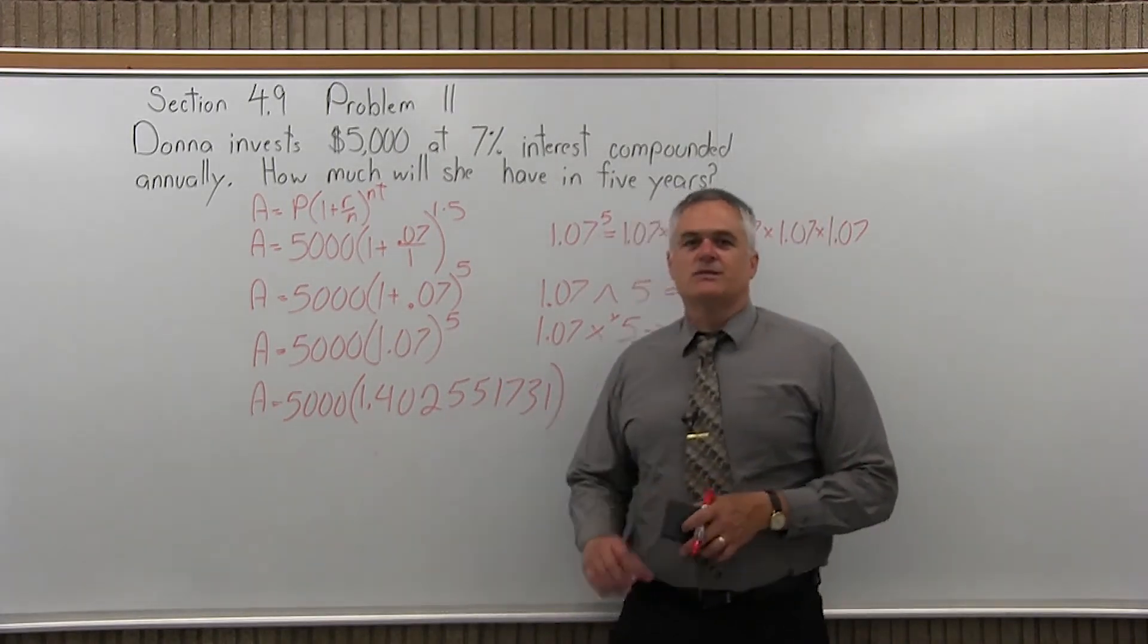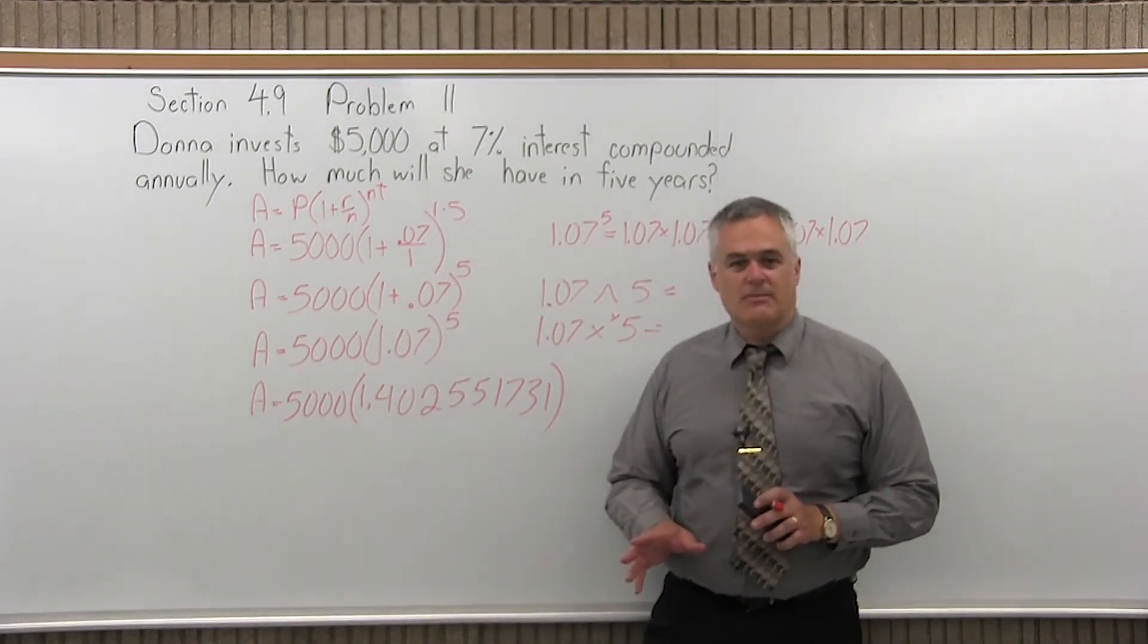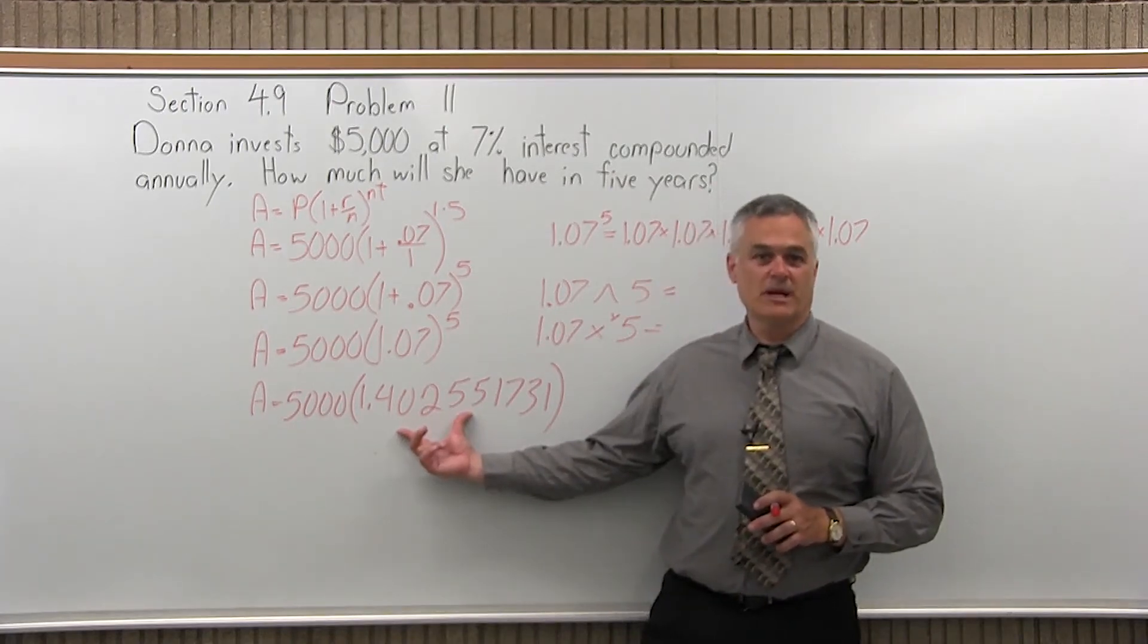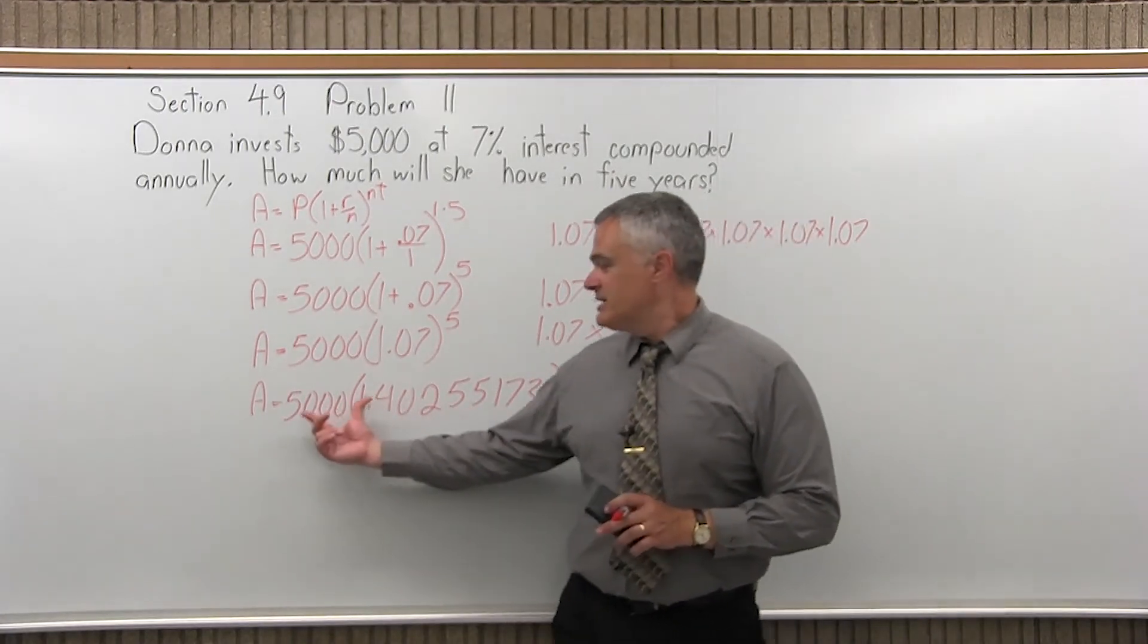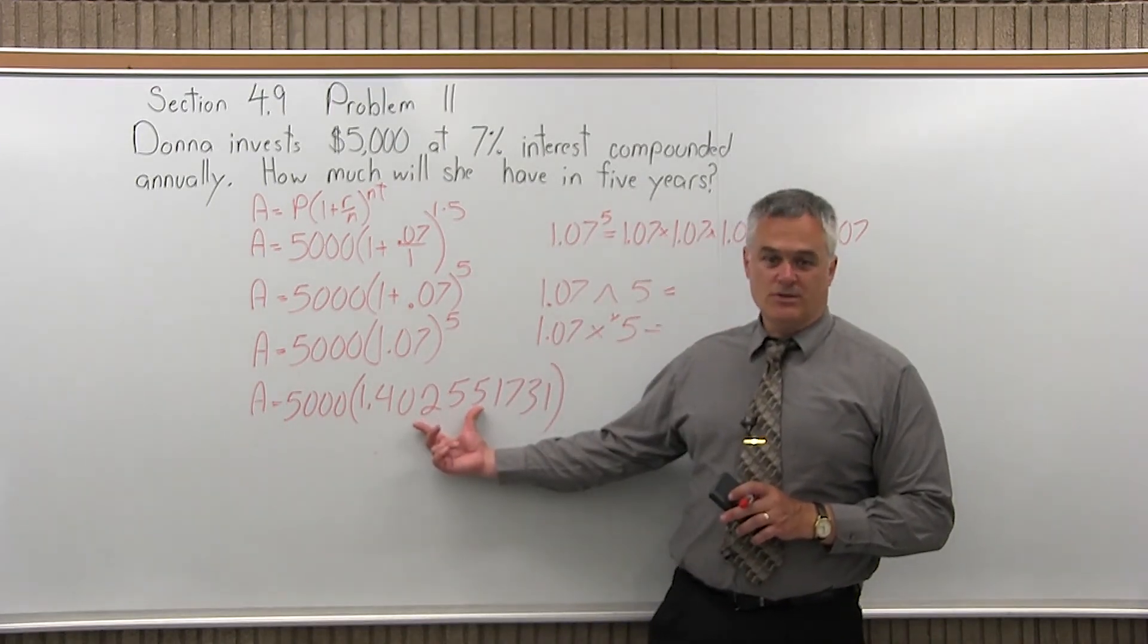Now, that's a lot more decimals than I need, and I will round it, but not yet. I'll do one more step. This 1.4025 something is on the screen of my calculator now. That number needs to get multiplied times 5,000. So I just leave the number with all those decimals on the screen.